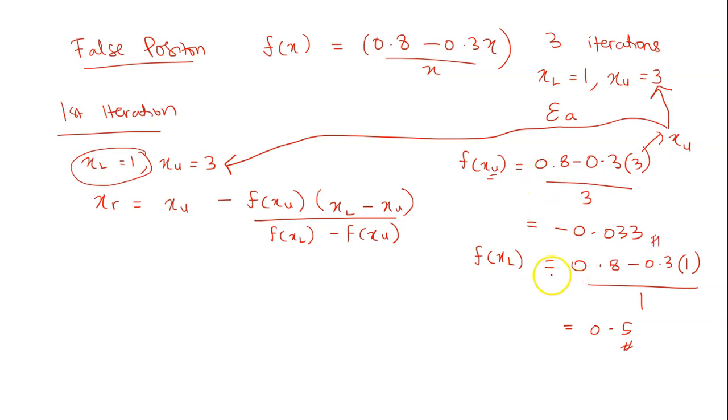So when you get all these values you can substitute back into the x_r formula to calculate your x_r. So x_u here is 3 minus f(x_u) is negative 0.033. This one is x_l minus x_u. So please don't mix this the other way around. It's not x_u minus x_l. It's always x_l minus x_u.